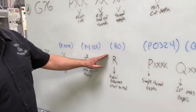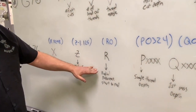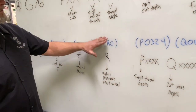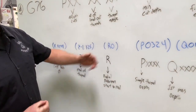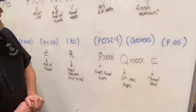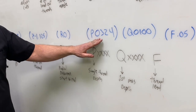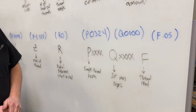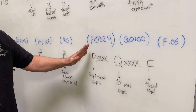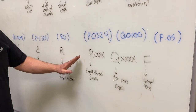The next value is an optional R — this is for cutting taper threads, representing the difference in radius from start to end on the taper. We're cutting straight threads, so I'm going to eliminate it from this line of code. The next is another P letter address, which designates our single thread depth. This does not have any decimal points and must be a four-digit value. Our single thread depth was 0.0324, so this will be P-0324.